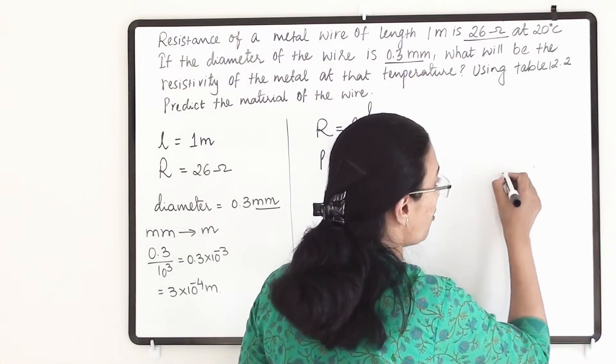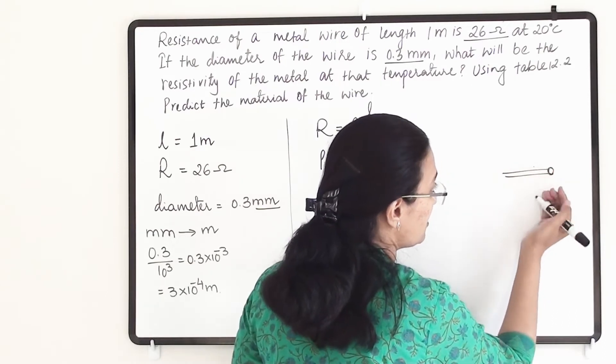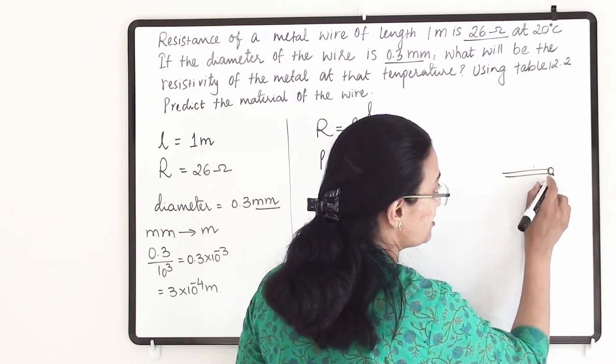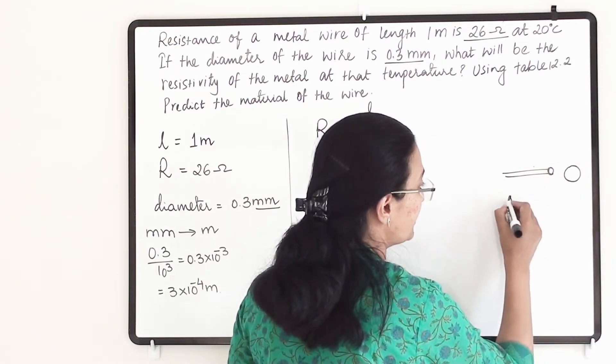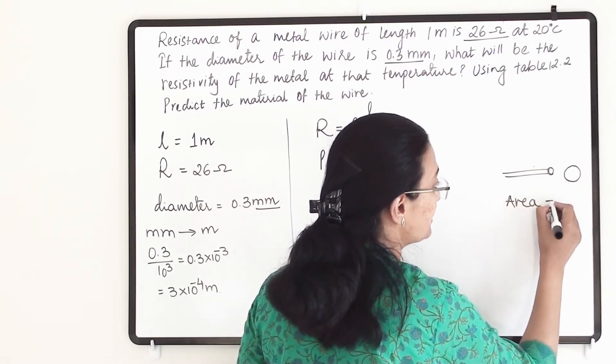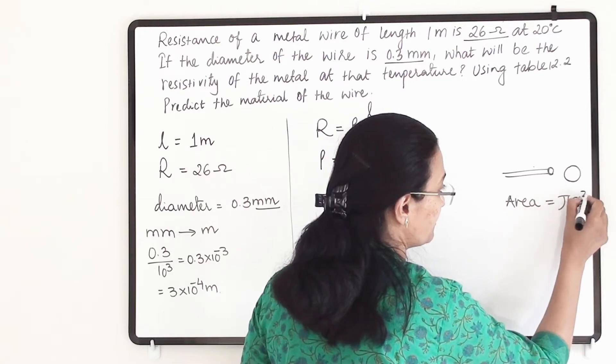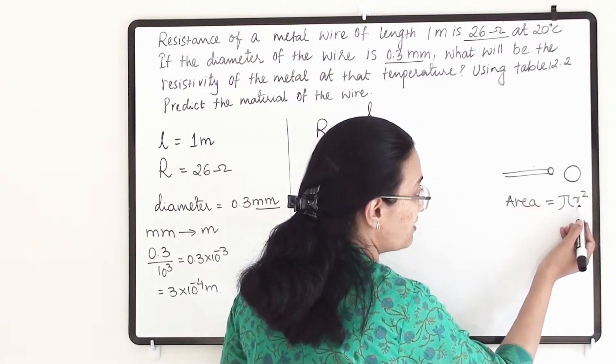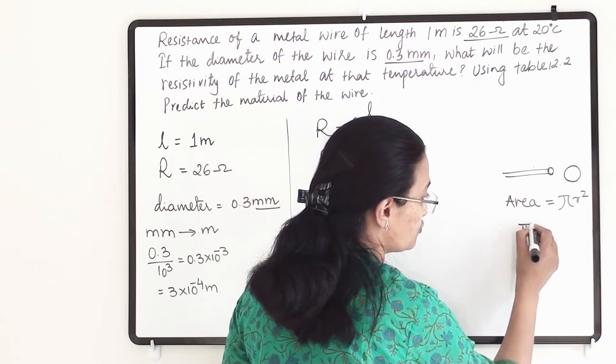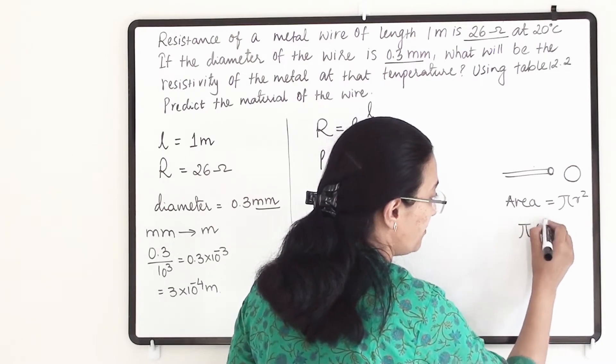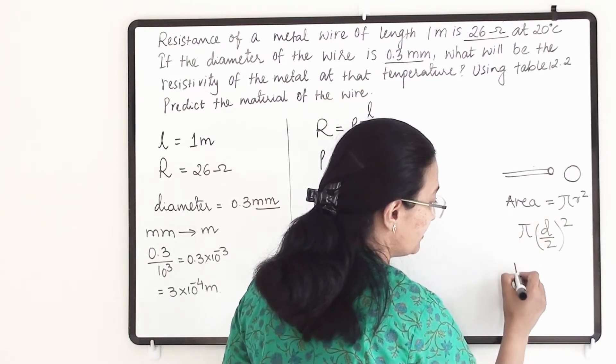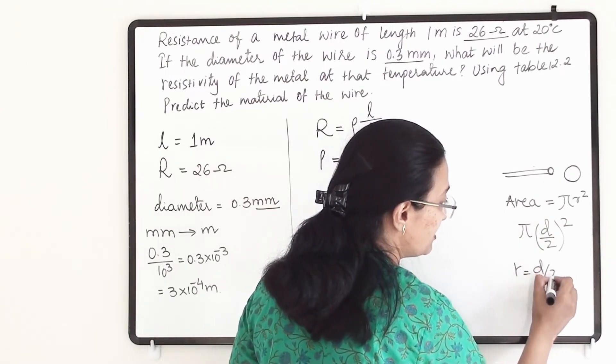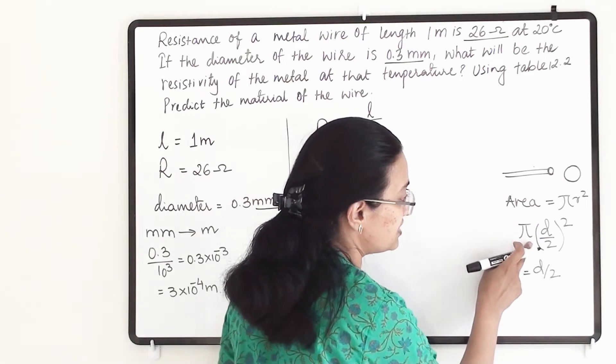Area of cross section of the conductor will be a circle. We know that area of circle is pi R square. Instead of R we have diameter, so I am going to write pi D by 2 whole square, because radius equals diameter divided by 2.